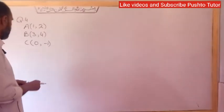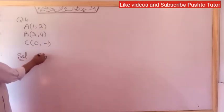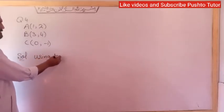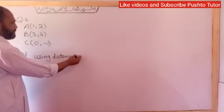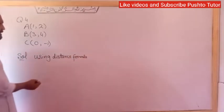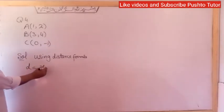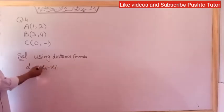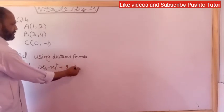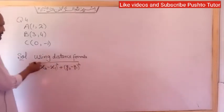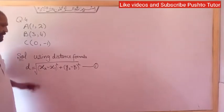Solution: Using the distance formula. The distance formula is: d = √((x2 - x1)² + (y2 - y1)²). Let this be equation 1.